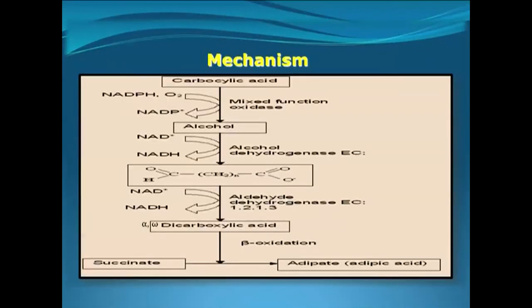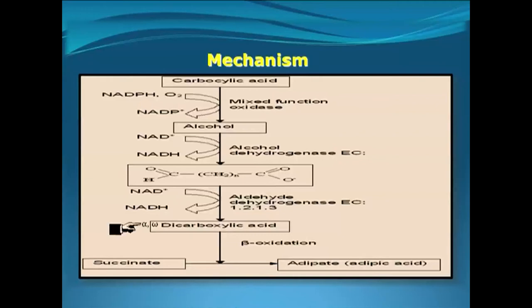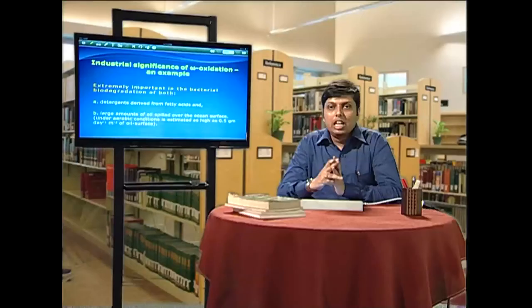As shown in this slide on the mechanism of omega oxidation: a carboxylic acid with the help of NADPH and oxygen is converted to an alcohol through hydroxylation at C-omega. This alcohol is converted to an aldehyde, which is then oxidized to form an alpha-omega dicarboxylic acid. This gets converted to the coenzyme A intermediates and enters the normal beta-oxidation pathway, generating succinate and adipate as the end products.